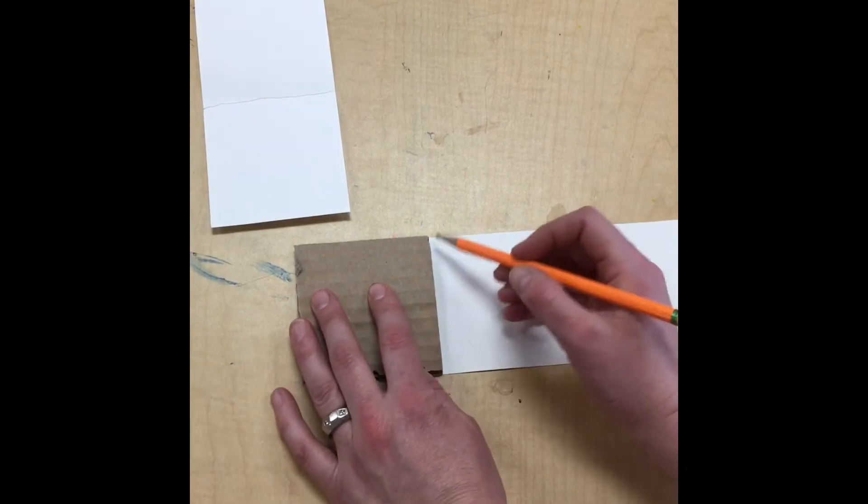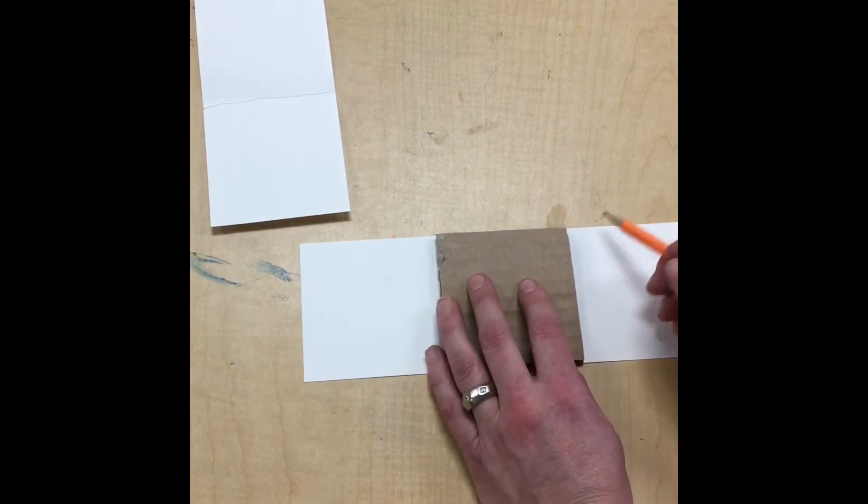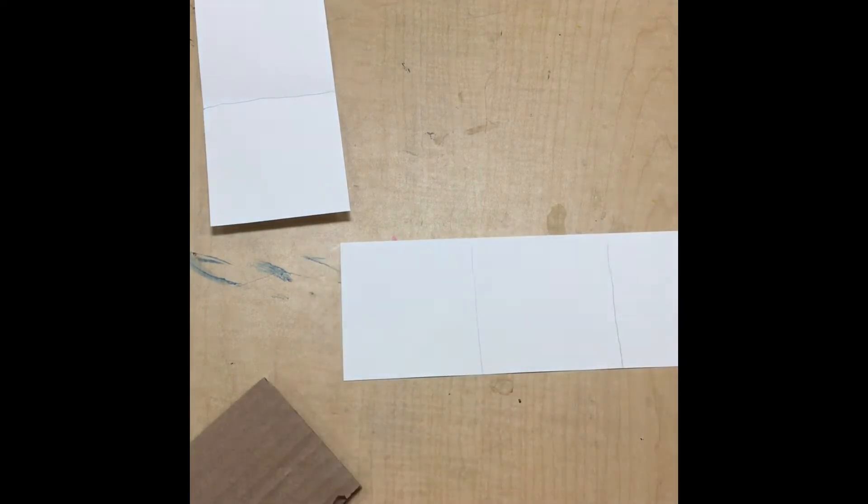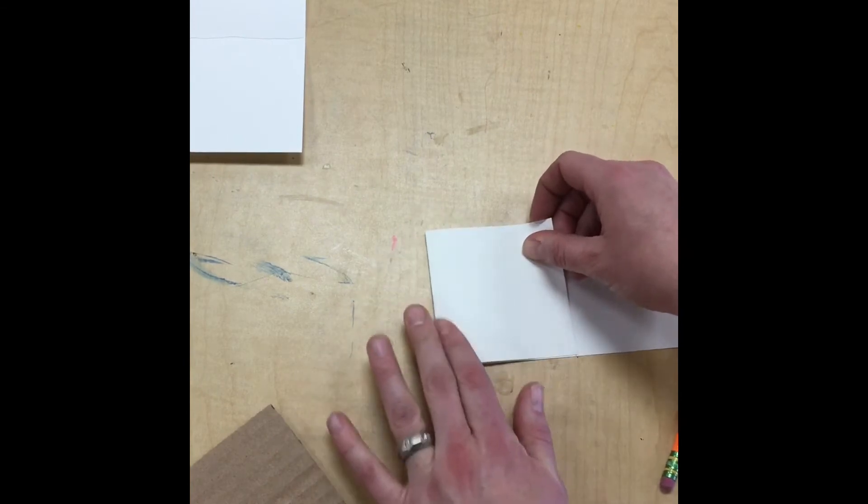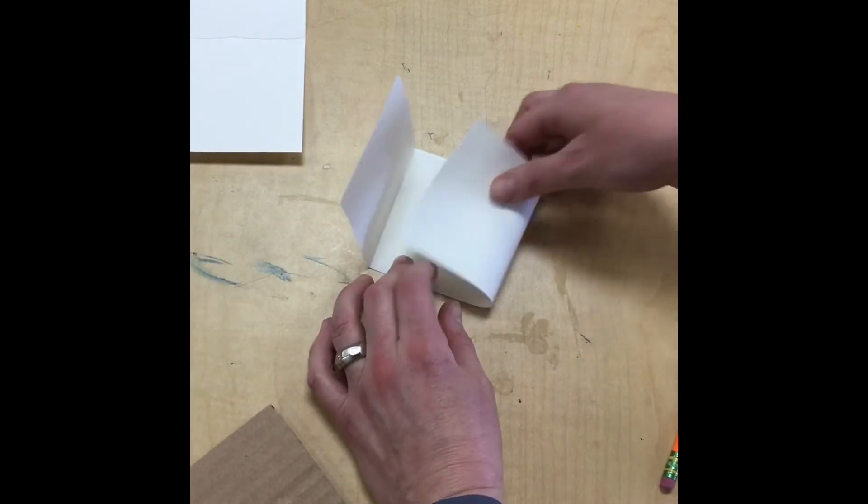My second piece of paper, I'm going to do the same thing. Maybe it would help you to draw your lines first using the square. If you find that easier, you can try that method. And then I'm going to fold on those lines.